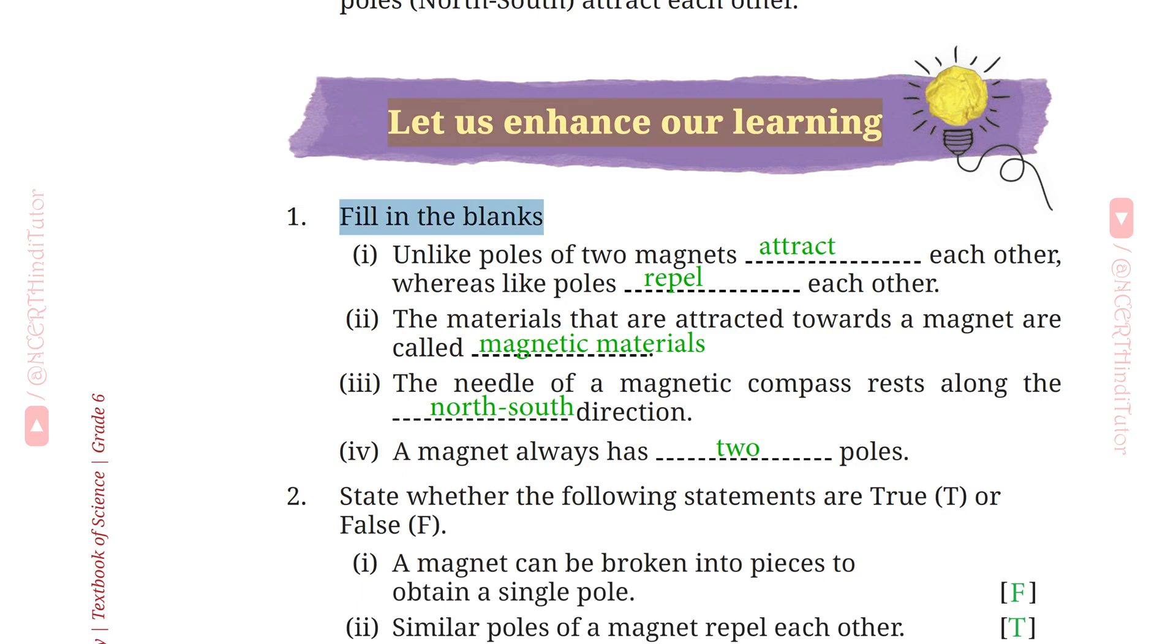Question 1: Fill in the Blanks. First, unlike poles of two magnets attract each other, whereas like poles repel each other. Second, the materials that are attracted towards a magnet are called magnetic materials.